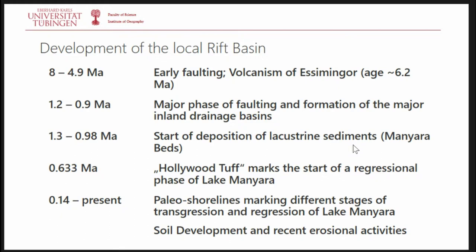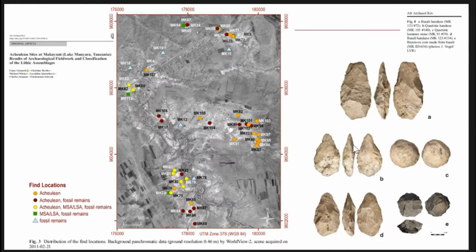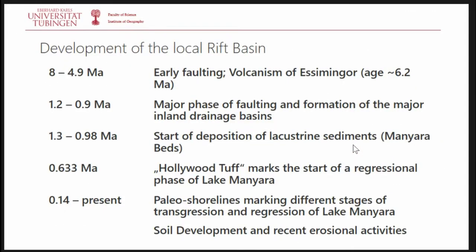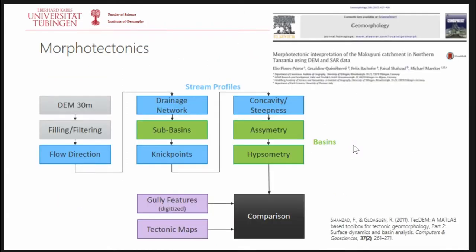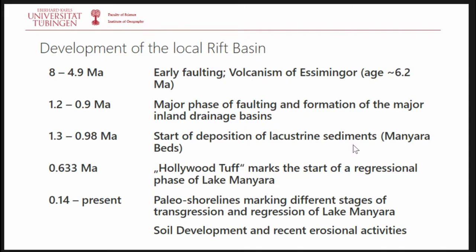Now we take a step back to look at the broader landscape view. This is the development of the local rift basin — the Maniara branch, which ends when it hits the Tanzanian Craton, an old stone formation. Then the rift basin ends. We can see this in the tectonics: the basin reached a steady state about 1.2 million years ago, so not much has happened since then.